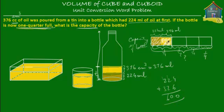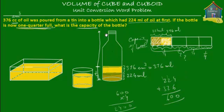One quarter is equal to 224 plus 376, which equals 600 ml. So one quarter is equal to 600 ml. If one fourth is equal to 600 ml, then the whole capacity — all four parts — will be equal to 600 times 4. 6 times 4 is 24, so that gives us 2400 ml. The capacity of the whole bottle is equal to 2400 ml, or 2 liters and 400 ml.